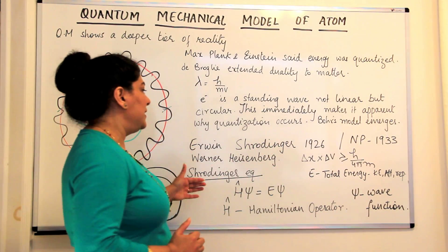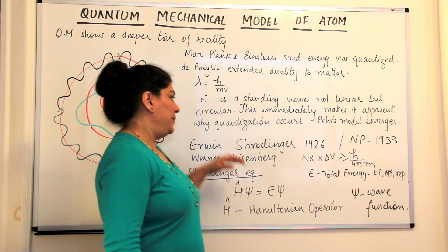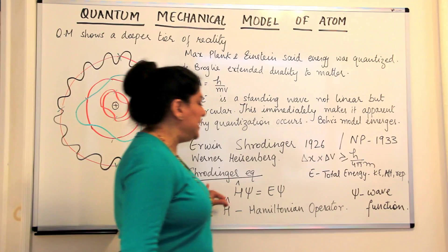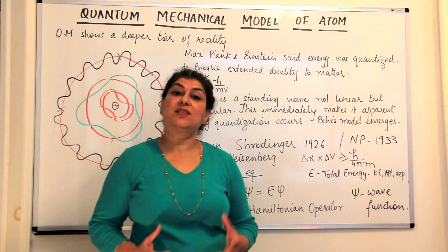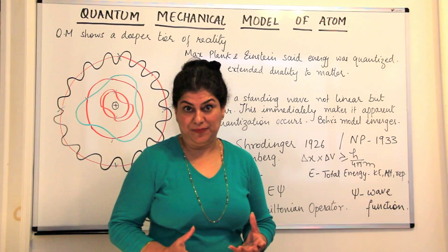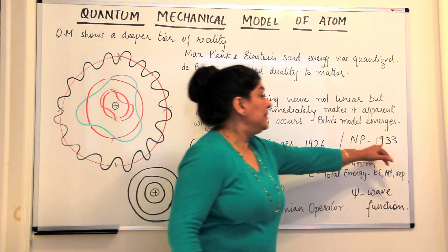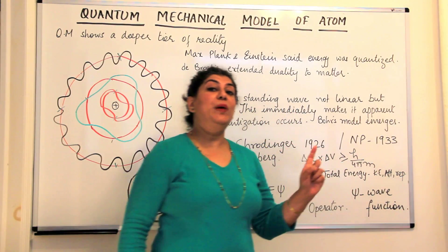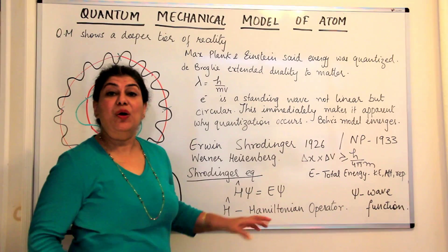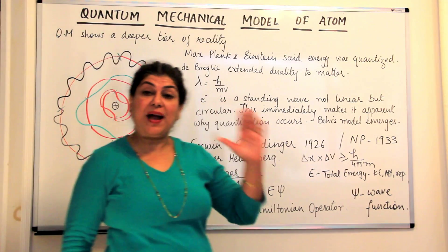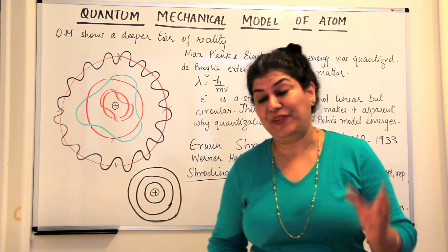And on the other hand, Erwin Schrödinger gave a mathematical equation and in 1926 he gave this mathematical equation which is now popularly known as the Schrödinger wave equation. In 1933 he got the Nobel Prize for physics for this equation that he had given, which became the backbone of the quantum mechanical model of an atom.